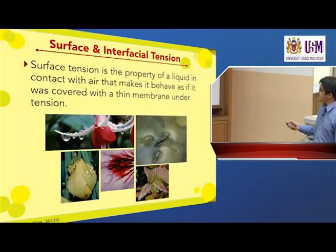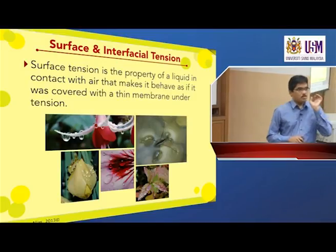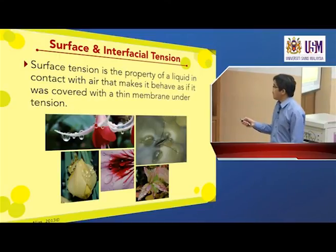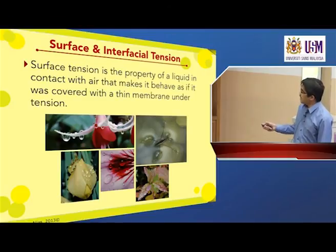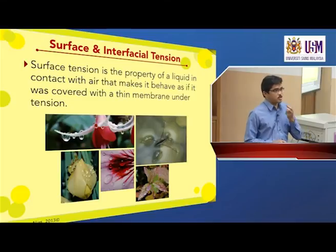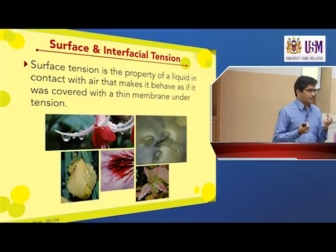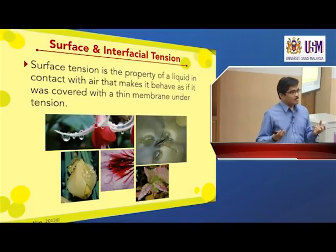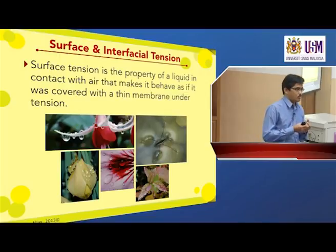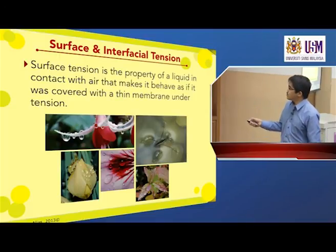Surface tension is the property of a liquid in contact with air — liquid is one phase, another phase is air — that makes it behave as if it was covered with a thin membrane under tension. So remember, when we use the term surface tension, it refers to the interface between liquid and air. When we have a liquid and liquid interface, we cannot use the term surface tension — it's not accurate.